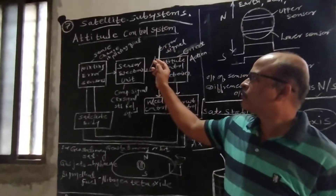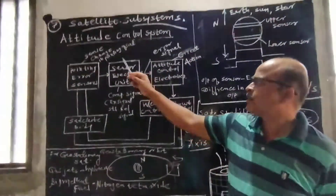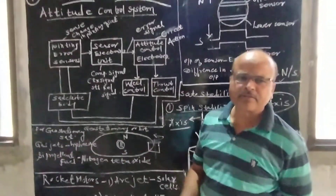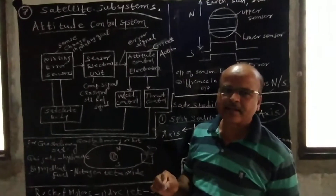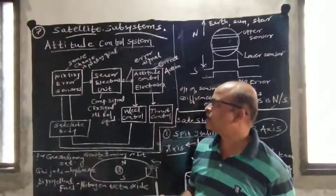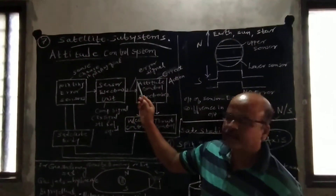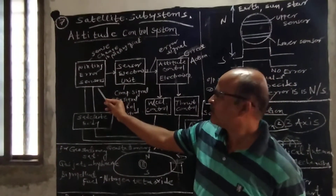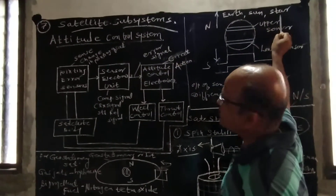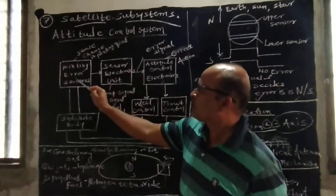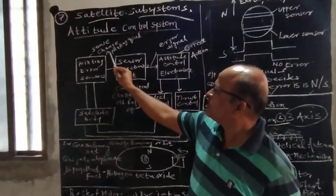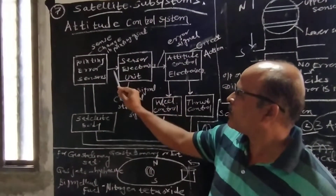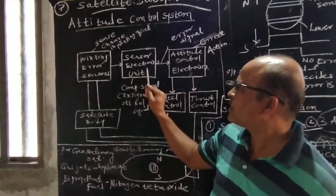We have to keep Attitude and Orbit at a proper place. The first is the Attitude Control System. The main aim of the Attitude Control System is that we have to keep the Satellite Antenna Beam towards the Earth Station. To keep the satellite antenna towards the Earth Station, different pointing error sensors are used — Earth sensors, Sun sensors, and Star sensors. These pointing error sensors sense the changes in the pointing of the satellite, and this change is given to the sensor electronic unit.